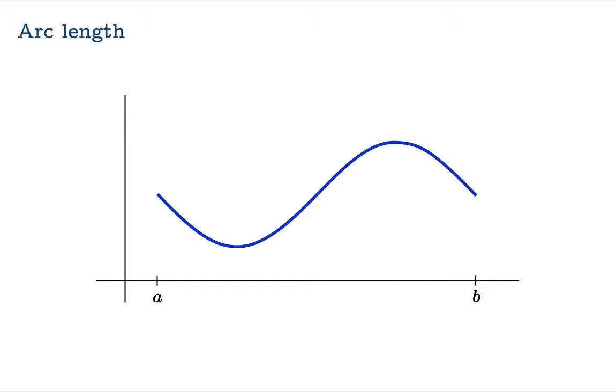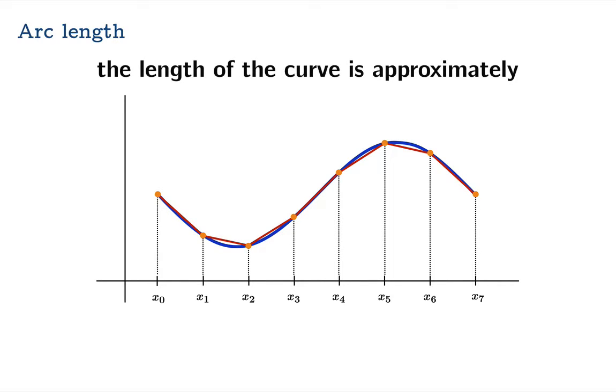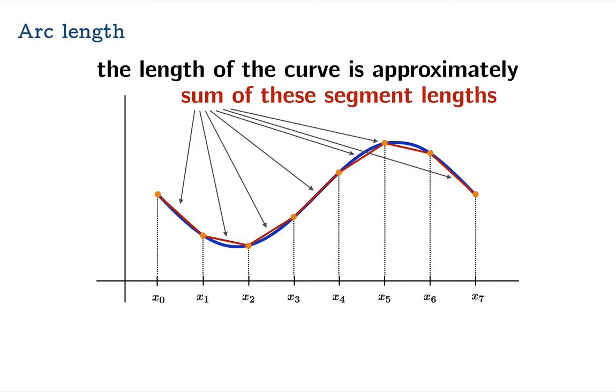So we'll take the interval from a to b and we'll chop it up into several pieces and in fact we will relabel the endpoints so that they're consistent with this relabeling. We'll go ahead and evaluate the function at each of these endpoints and then we're going to draw these segments here that join those endpoints. If we could calculate the lengths of each of those segments then the length of the curve is approximately the sum of these segment lengths.